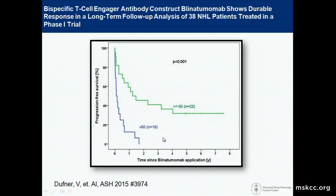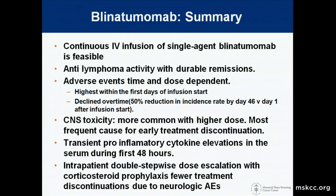Updated at ASH last year was long-term follow-up from patients treated on the initial study. Here you're seeing, broken down by age, a group of patients out seven years. This was a total of 22 patients, with about 30 percent without additional treatment — clearly an active therapy for a proportion of patients. That 30 to 40 percent rate of long-term responders seems to be reproducible across different agents.